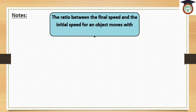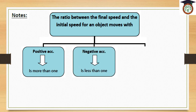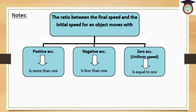Notes: the ratio between final speed and initial speed for an object moving with positive acceleration is more than 1, because the final speed is greater than the initial speed. If the object moves with negative acceleration, the ratio between final speed and initial speed will be less than 1, because the final speed is less than the initial speed. If the object moves with uniform speed (zero acceleration), the ratio between final speed and initial speed equals 1, because the final speed and initial speed are equal.